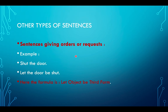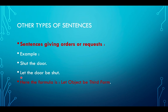For imperative sentences — where orders or requests are given — the ideal formula is: Let + object + be + third form of verb. For example, 'Shut the door' becomes 'Let the door be shut.' We add 'let', the object 'the door' comes next, followed by 'be', and then the third form of the verb — shut, shut, shut — the third form of 'shut' is 'shut'. So it becomes 'Let the door be shut.' That's it.